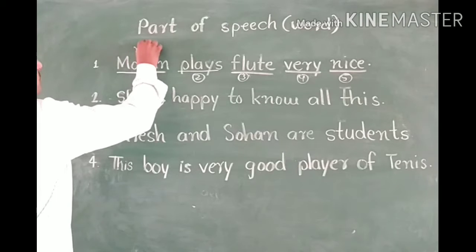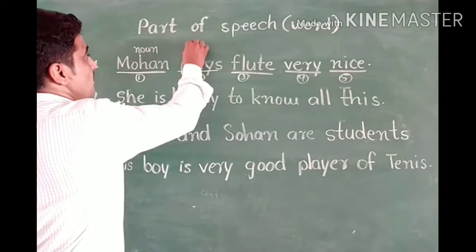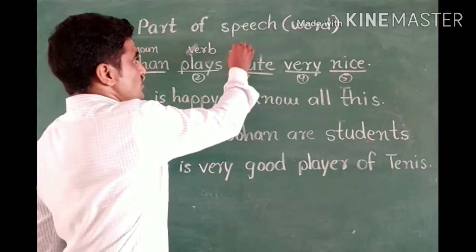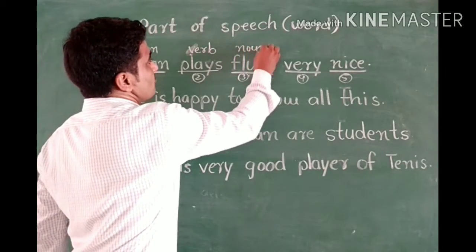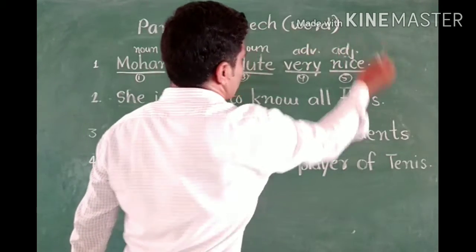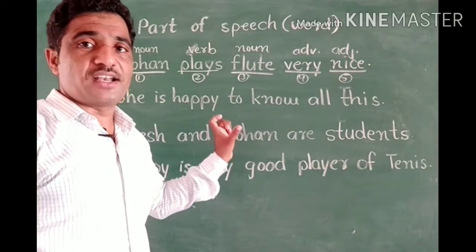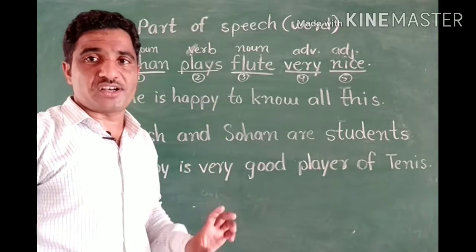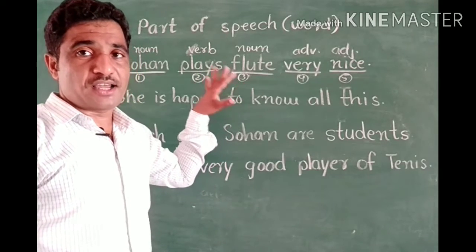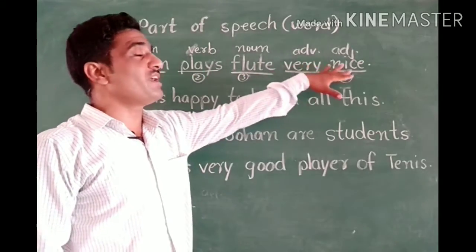Mohan is a noun — the first part of this speech is Mohan and it is a noun. Plays is a verb. Flute is also a noun. Very is the adverb and nice is the adjective. So in this speech there are five parts and every part has a different type of word.